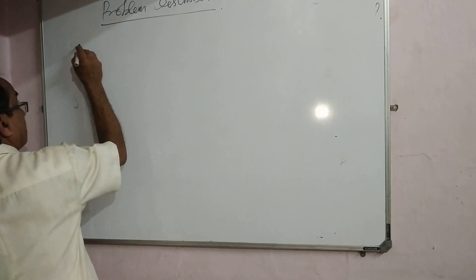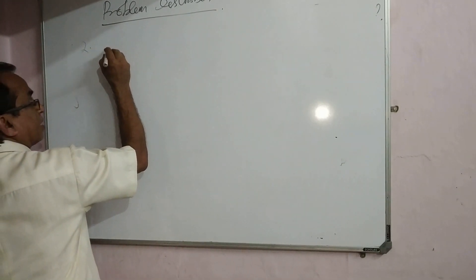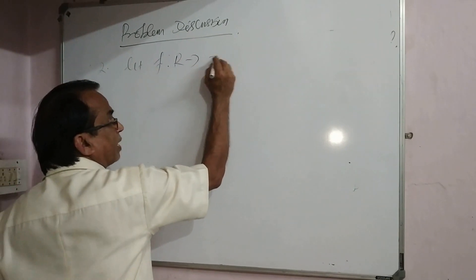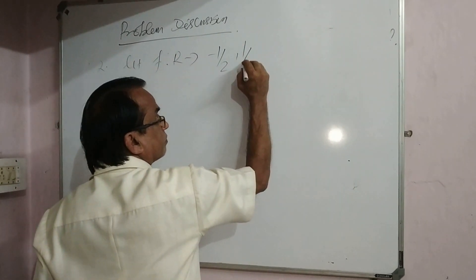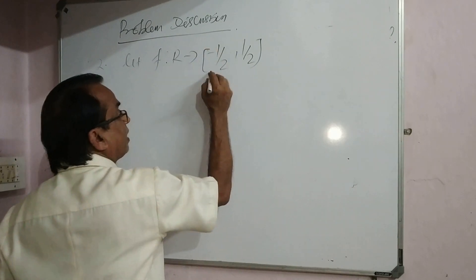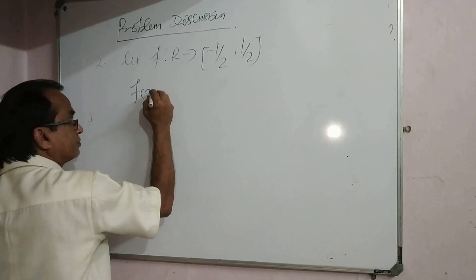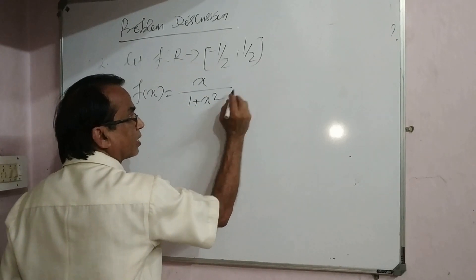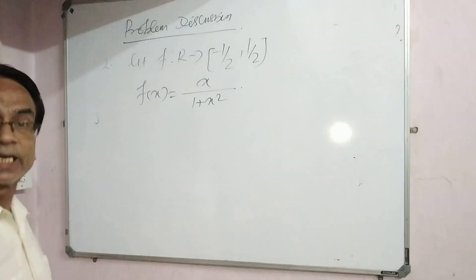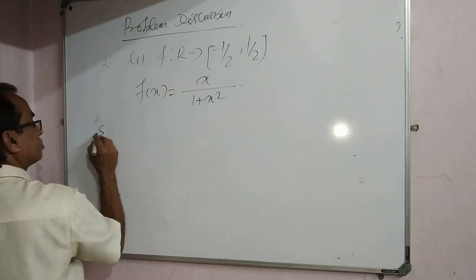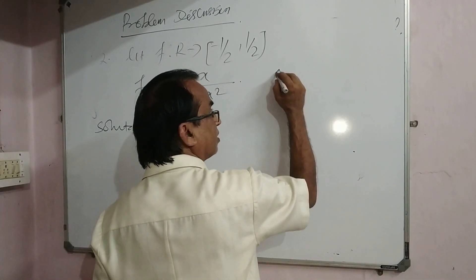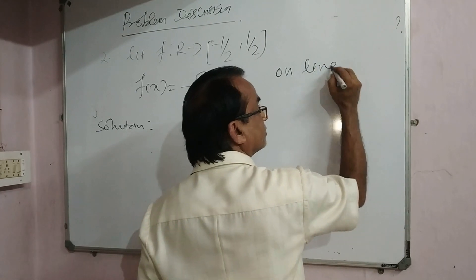Now coming to the second problem from NCERT exercise 1.2, number 2: let f map R to minus half to plus half, defined by f(x) equals x divided by 1 plus x squared, to prove injectivity. This problem is from JEE online 2018.